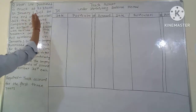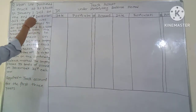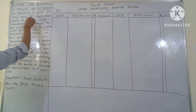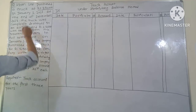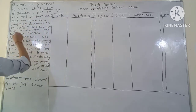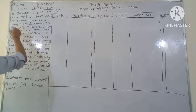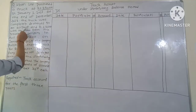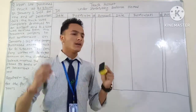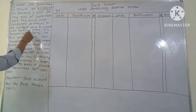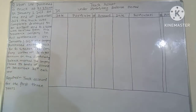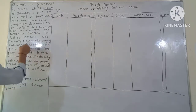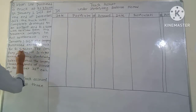The question states: Kiran Limited purchased a truck at rupees 3,50,000 on January 1st, 2017. At the end of December 2018, the truck was completely destroyed in an accident, and rupees 2,31,000 was received from the insurance company in full settlement. On January 1st, 2019, the company purchased another truck for rupees 4,50,000.